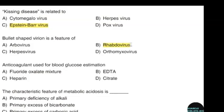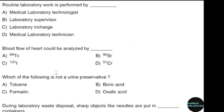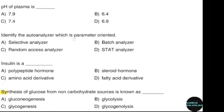Anticoagulant used for blood glucose estimation — correct answer option A: Fluoride oxalate mixture. Protein laboratory work is performed by — correct answer option D: Medical laboratory technician.